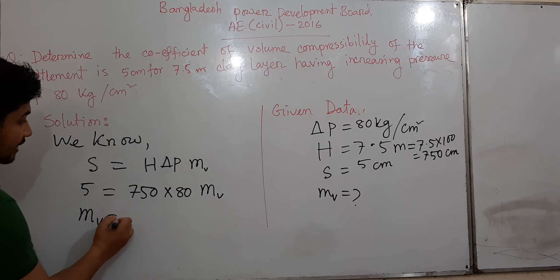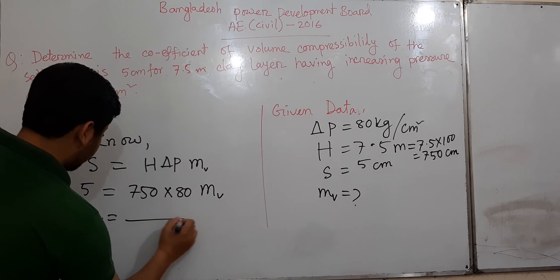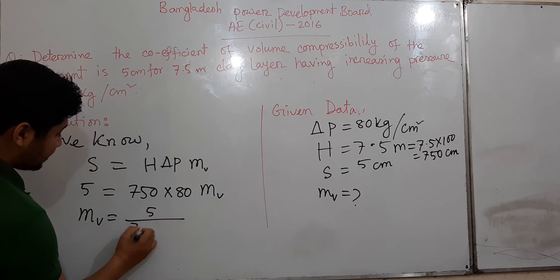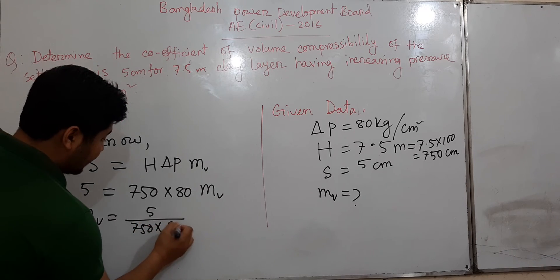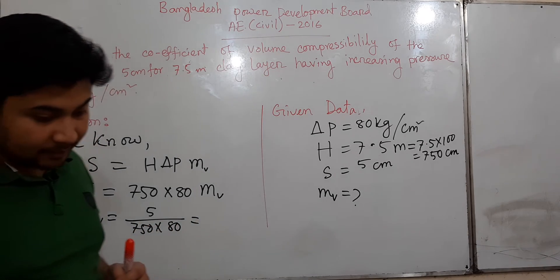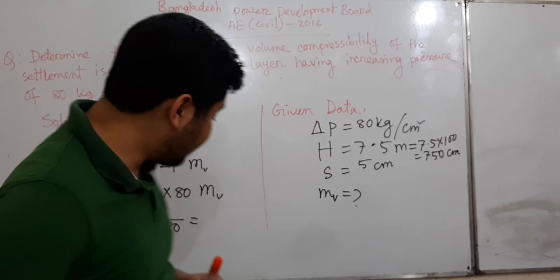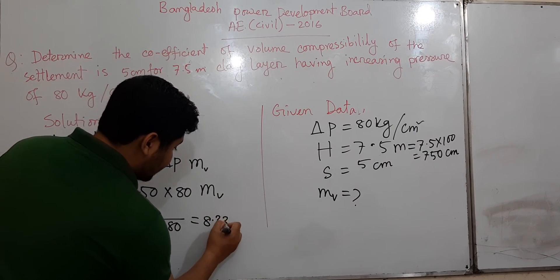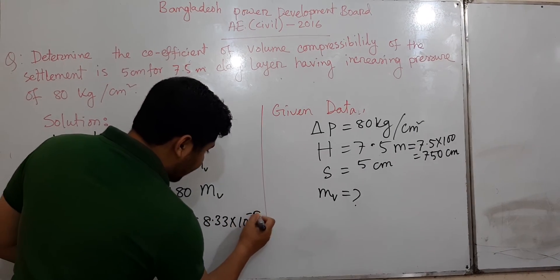So m_v equals 5 divided by 1500 into 80, which gives us 8.33 times 10 to the power minus 5.